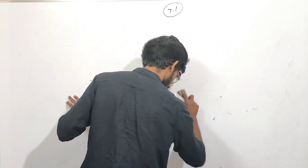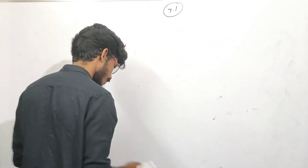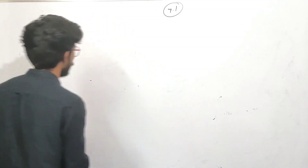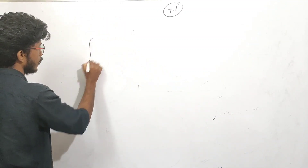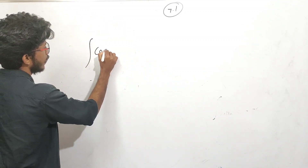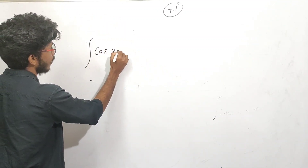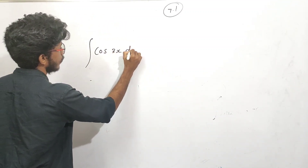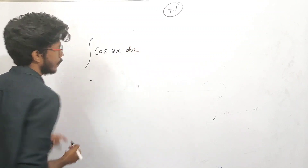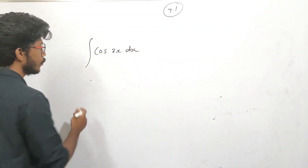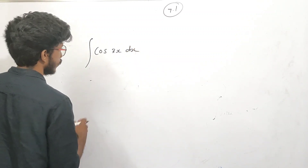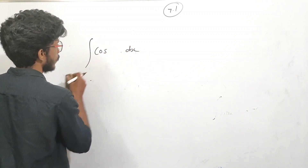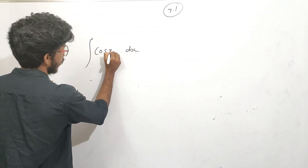Now we call it cos 3x. Now the integral of cos 3x — we want to be clear? The integral of cos 3x. Cos 3x is the integral of cos 3x.